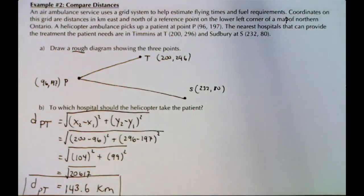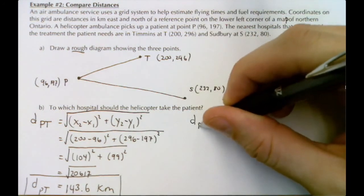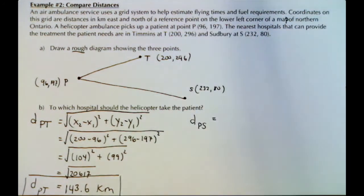That's our distance from P to T. What I would like you to try to do is find the distance from P to S. You can model it just like we did this one, and then you're going to come up with a conclusion at the end. You're going to decide where the air ambulance should take the patient—Timmins or Sudbury.